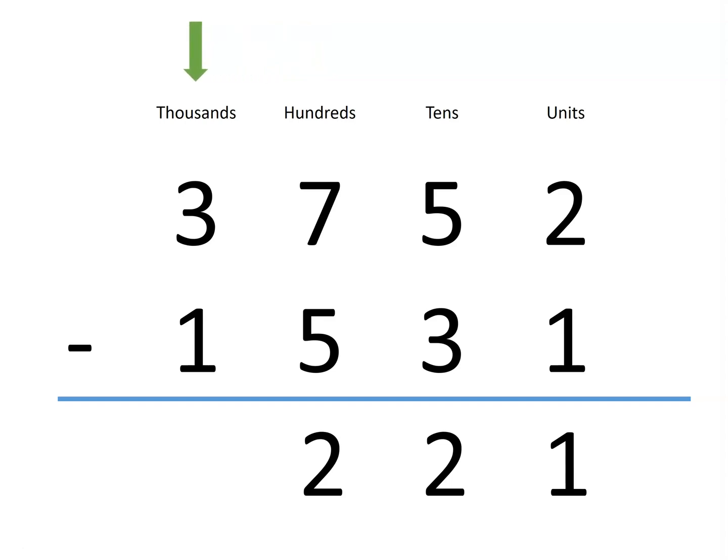Finally, in the thousands column, we have 3 thousands, but we are taking away 1,000. That leaves us with 2,000, for a difference of 2,221.